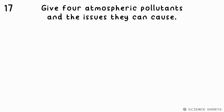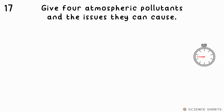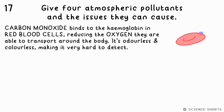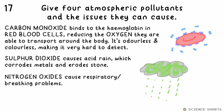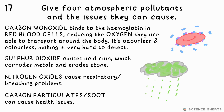Give four atmospheric pollutants and the issues they can cause. Carbon monoxide is poisonous. Sulfur dioxide causes acid rain, which corrodes metal and erodes stone. Nitrogen oxides can cause respiratory problems, and carbon particulates, or soot, can cause various health issues.